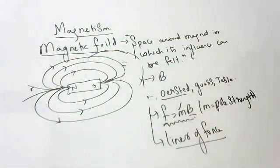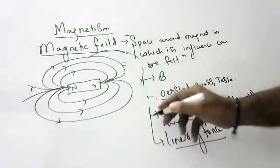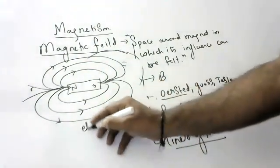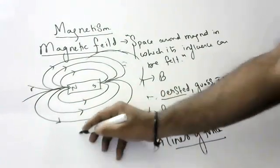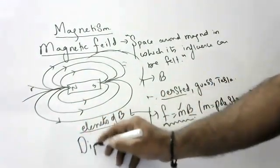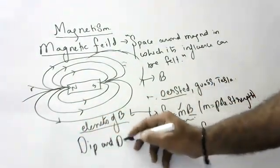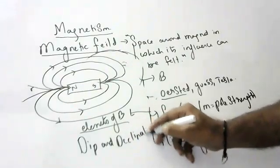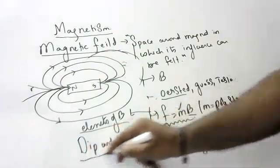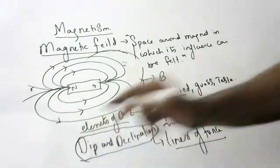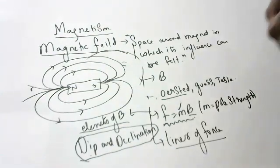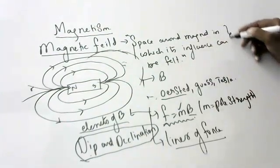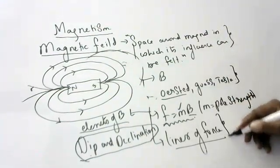Magnetic field consists of lines of force. And what are the elements of magnetic field? The elements of magnetic field are dip and declination. What is dip and what is declination — you will study in higher classes. It is not there for 10th class. Just know that the elements of magnetic field are dip and inclination.